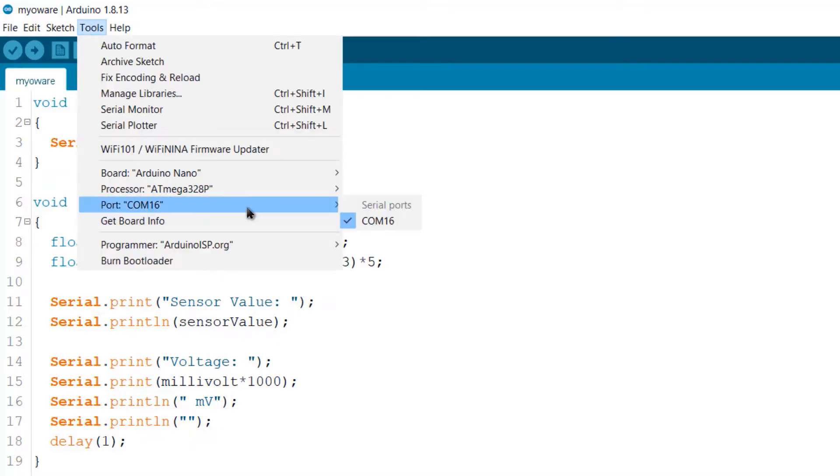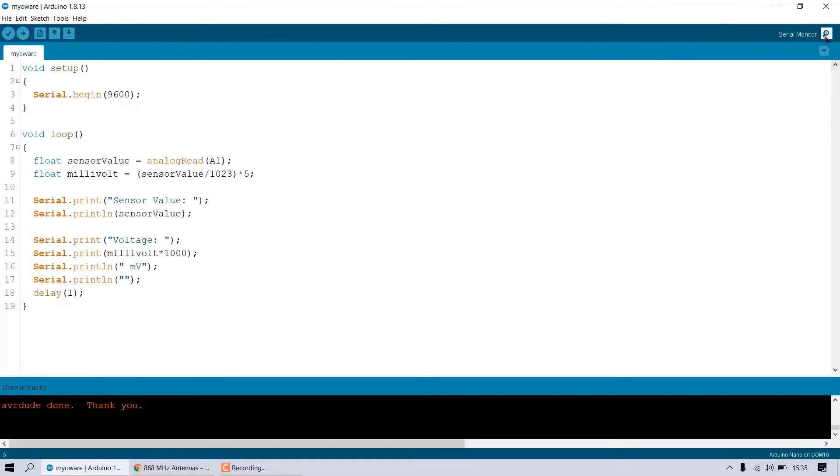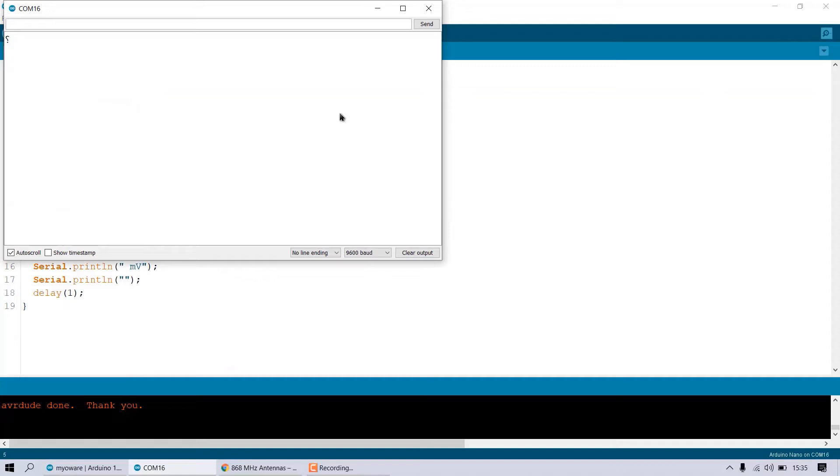So, select the Arduino board and the port. Click on upload so that the code will be uploaded. Open the serial monitor. The serial monitor will display the sensor value along with the voltage.